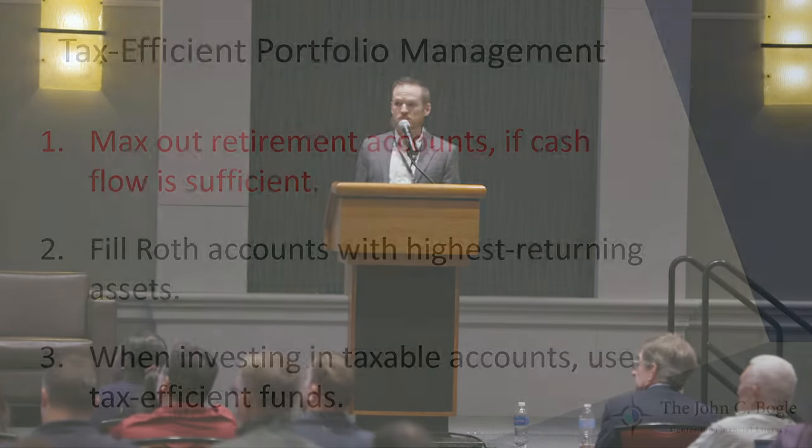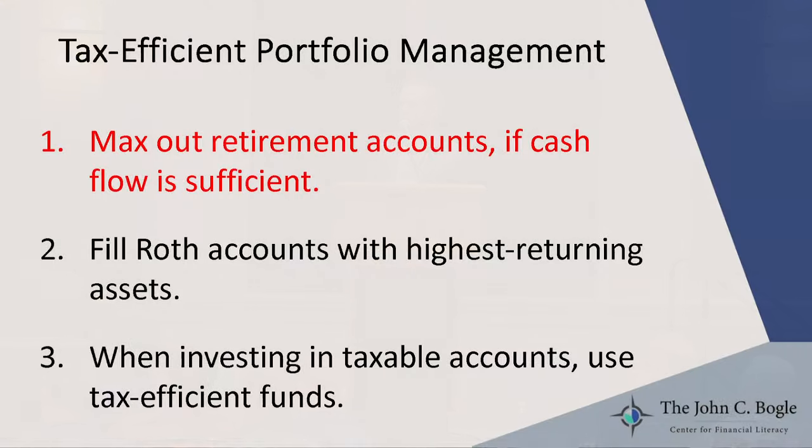The first one is pretty straightforward: max out your retirement accounts if you have enough cash flow to do that. Second, fill your Roth accounts with the assets that have the highest expected returns. And finally, when you're investing in taxable accounts, try to fill them with things that are tax efficient. So let's go through these one by one.